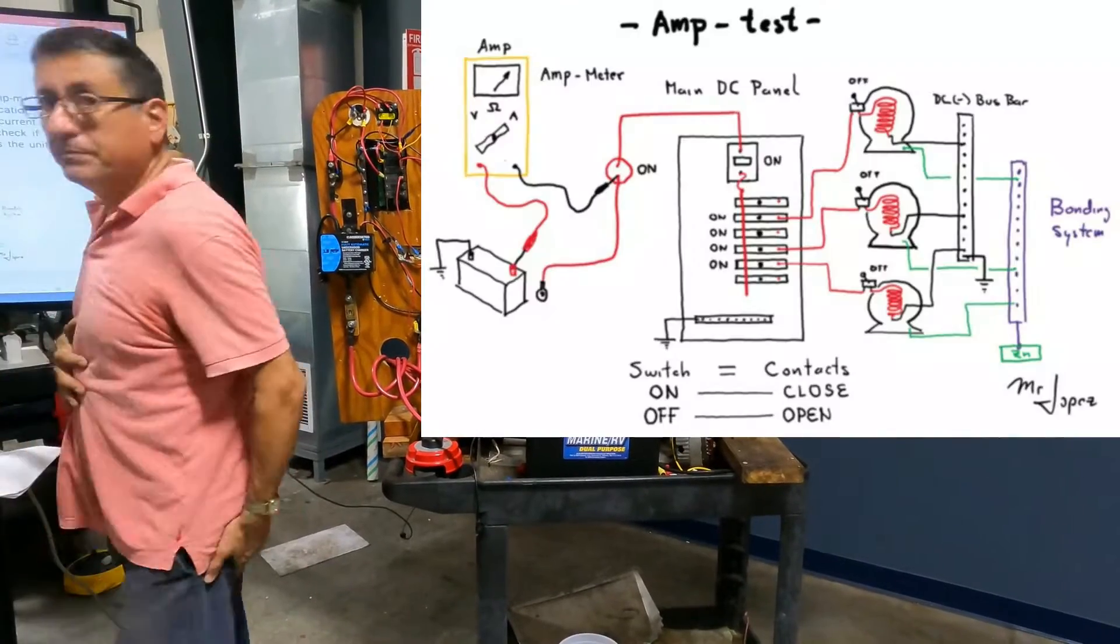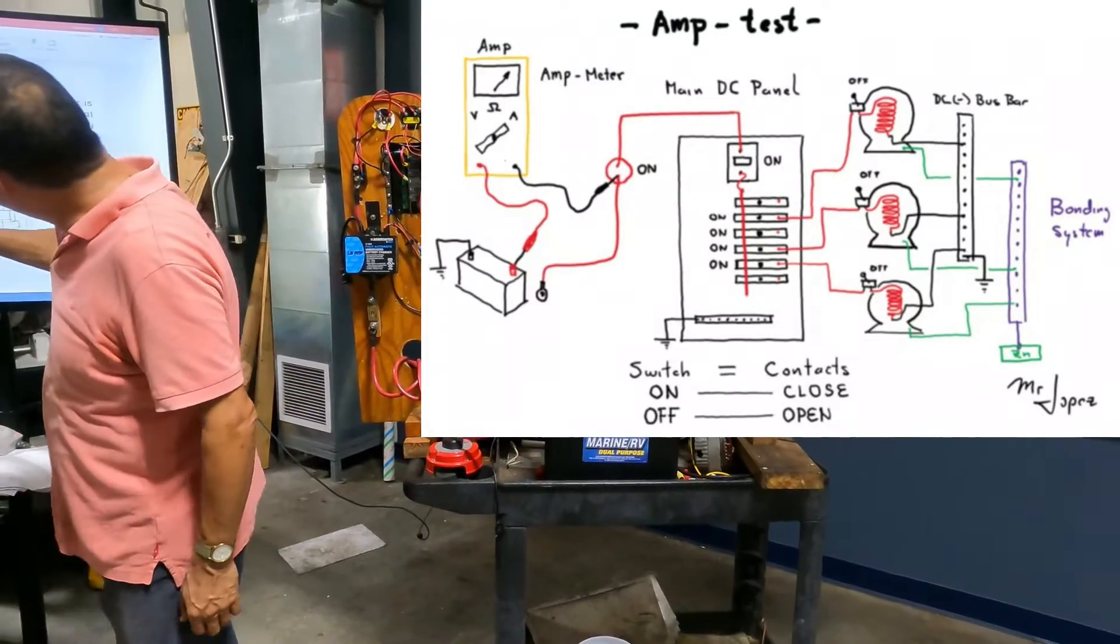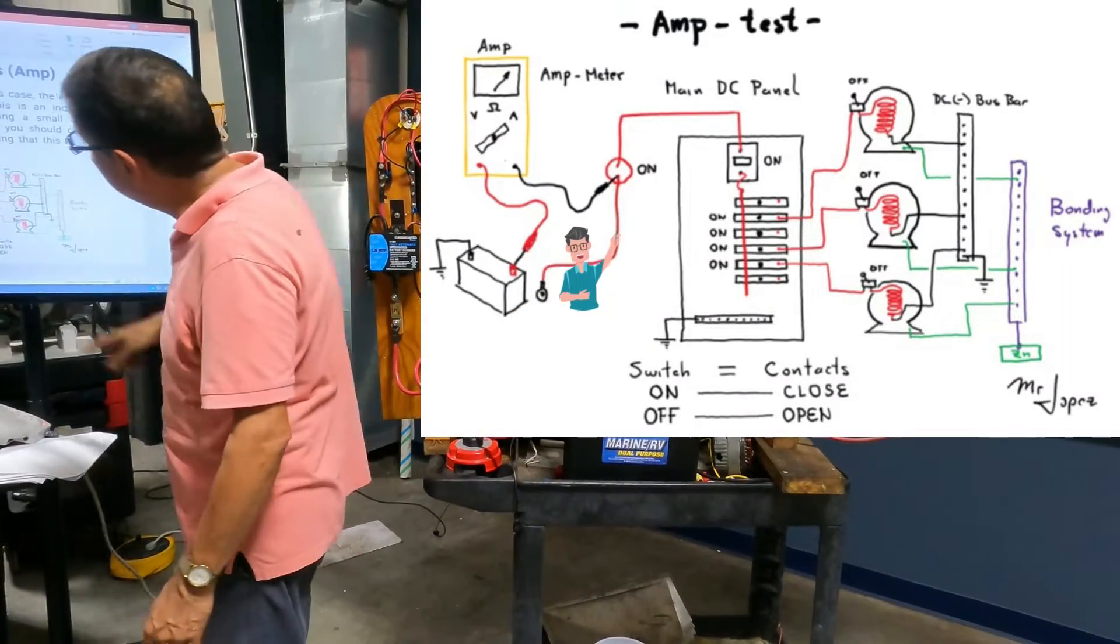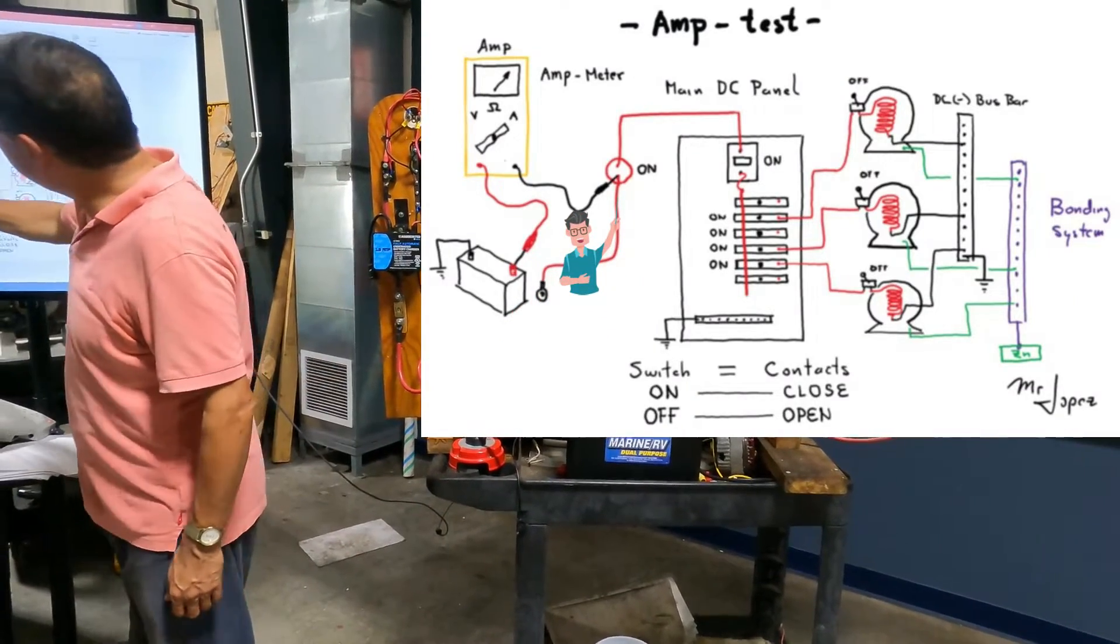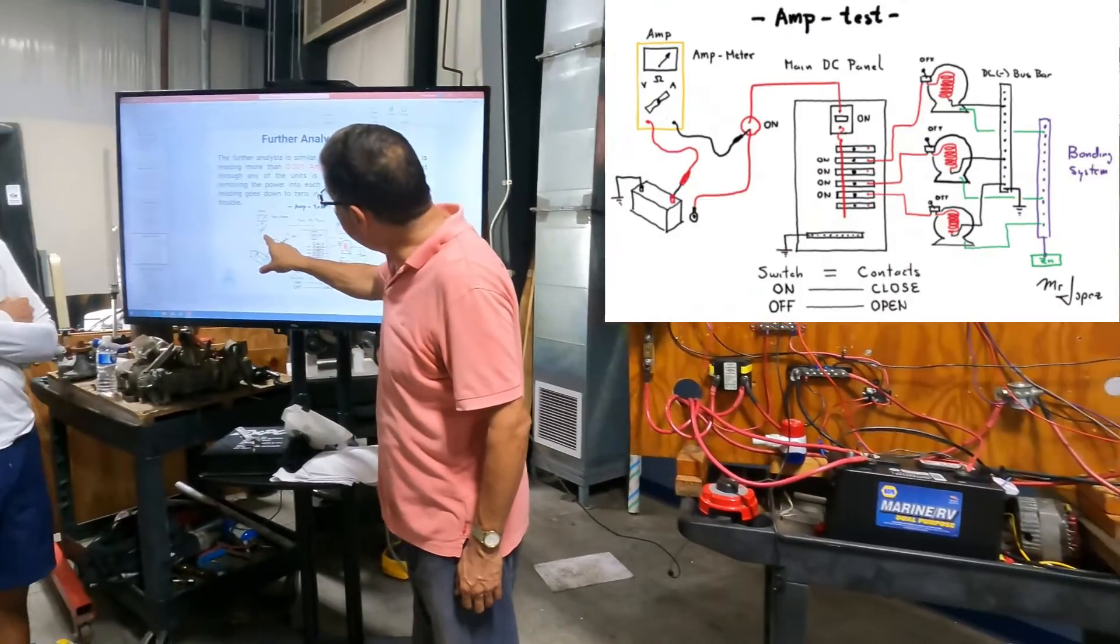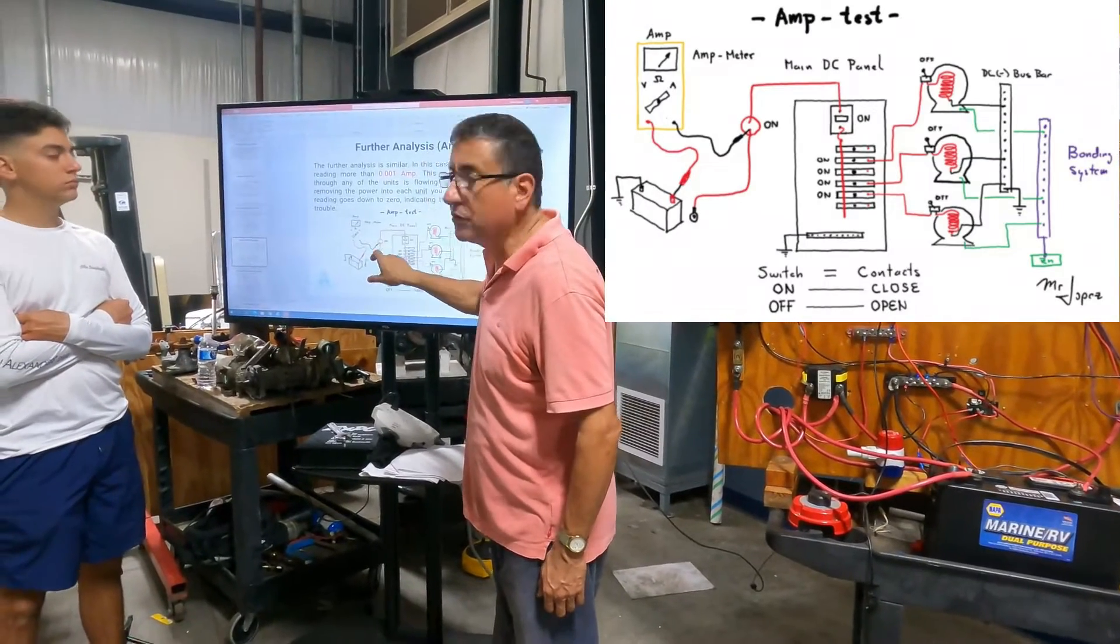I am going to do this connection. Pay attention. I am going to disconnect the positive from the battery switch selector and connect the ammeter, the red terminal of the ammeter to the positive terminal of the battery and the black terminal to the cable that you disconnect.